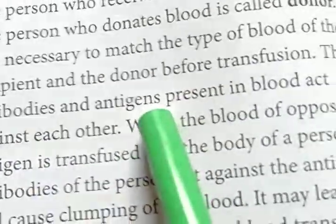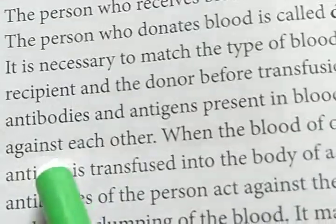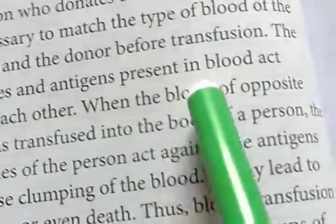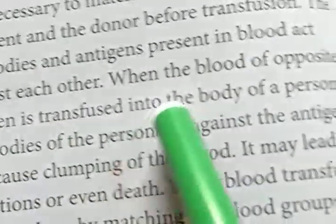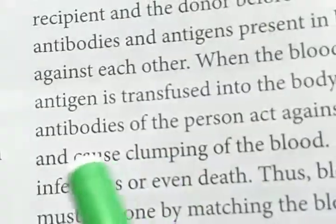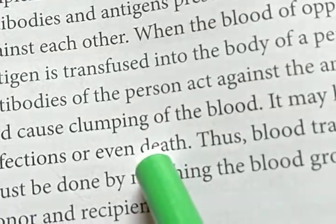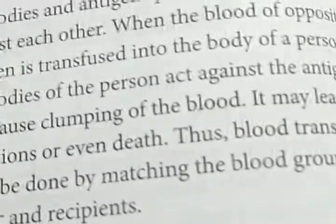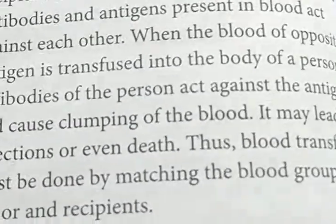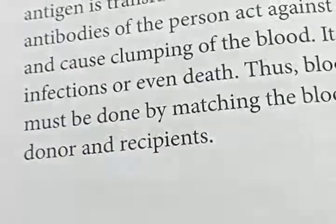The antibodies and antigens present in the blood act against each other. When blood of an opposite antigen is transfused into a person's body, the antibodies of that person act against the antigen and cause clumping of the blood. This may lead to infection or even death. Thus, blood transfusion must be done by matching the blood groups of the donor and recipient.